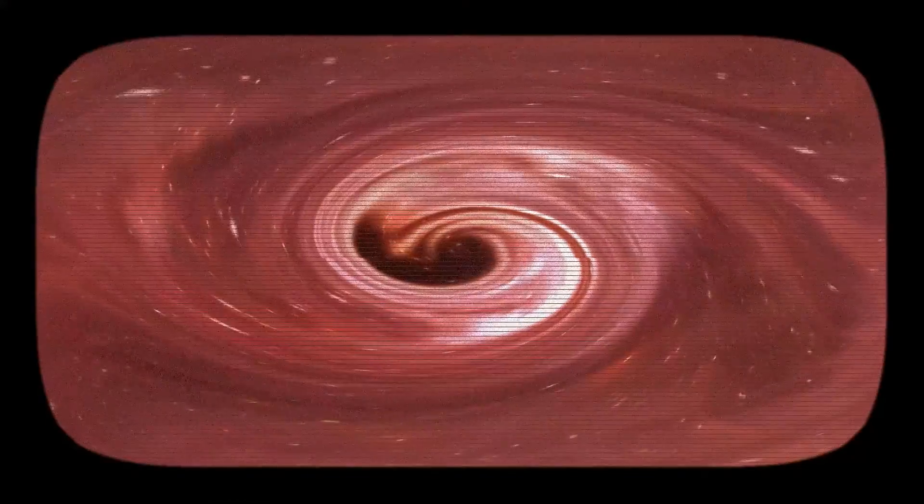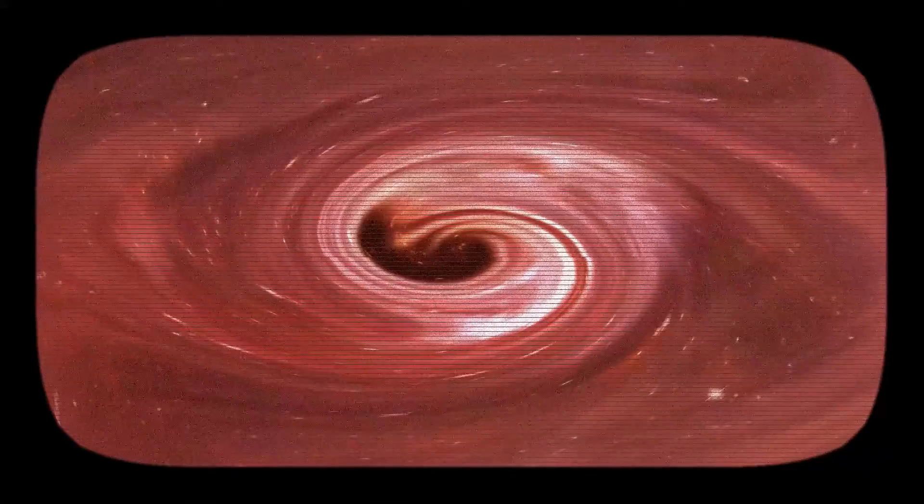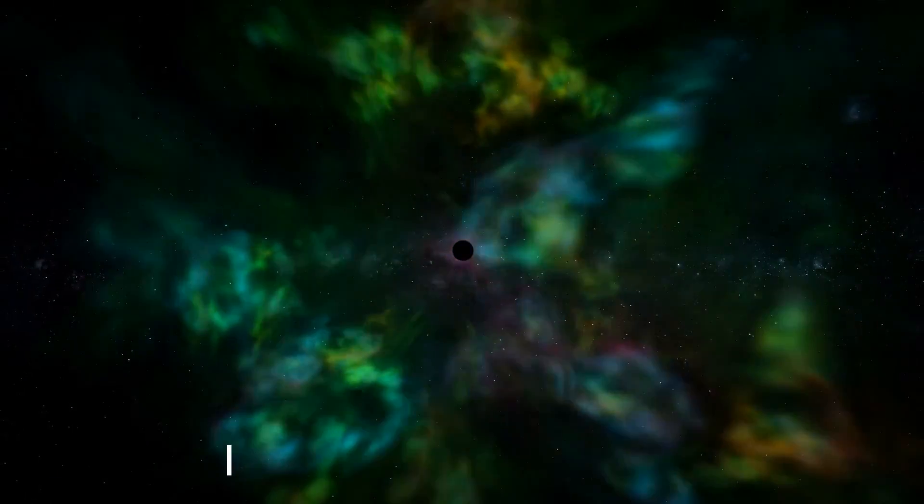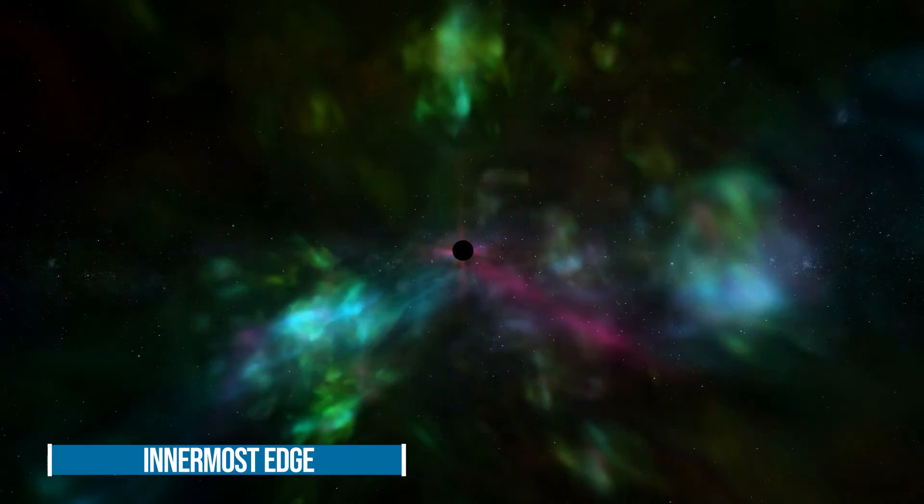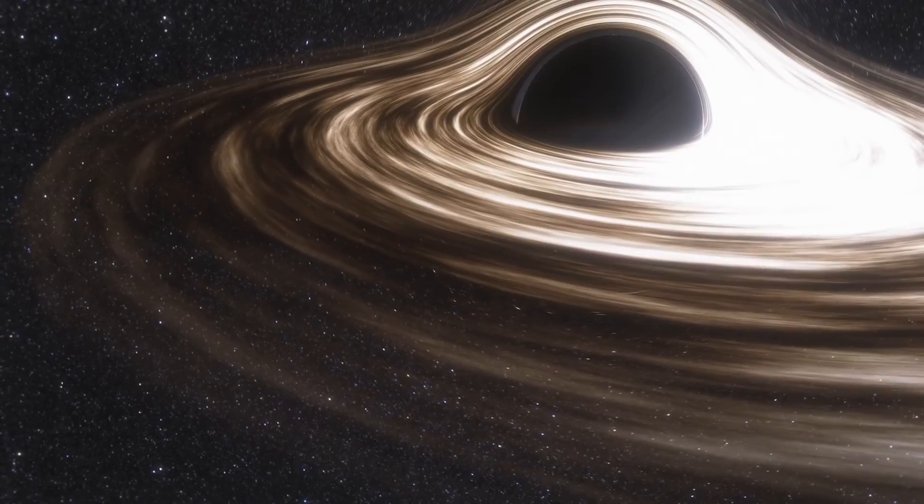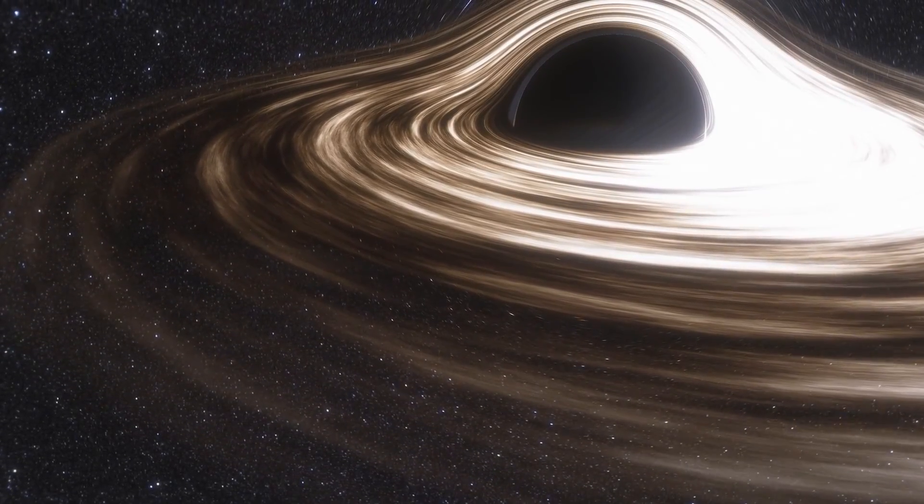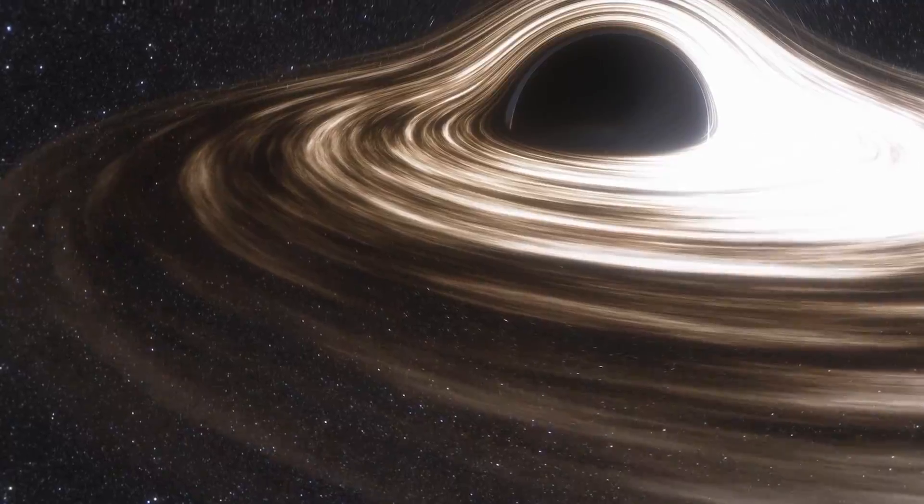Because of this, black holes have a dark appearance. Any light that is picked up by telescopes does not originate from the actual black hole, but rather from the region that surrounds it. The scientists refer to the very last part of the innermost edge of that light as the event horizon. This is also where the name of the Event Horizon Telescope partnership comes from.